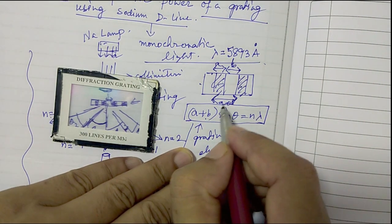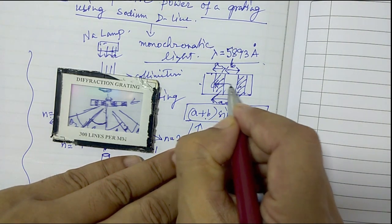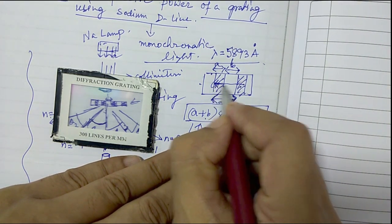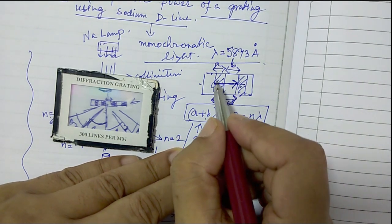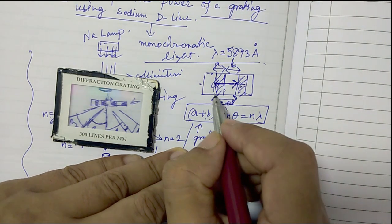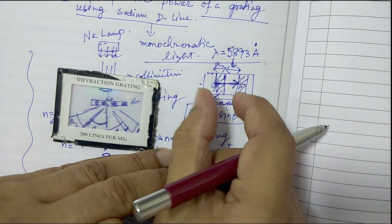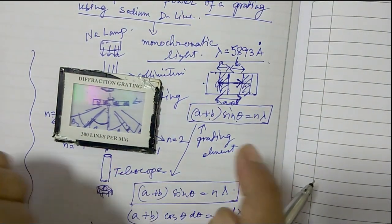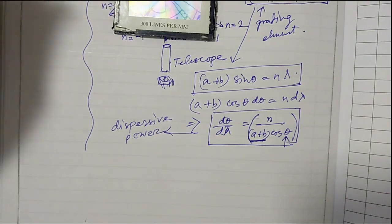So within this distance a plus b, how many lines are there? Only one line. So how much is the grating element? Grating element is the distance or the width within which there is only one line.